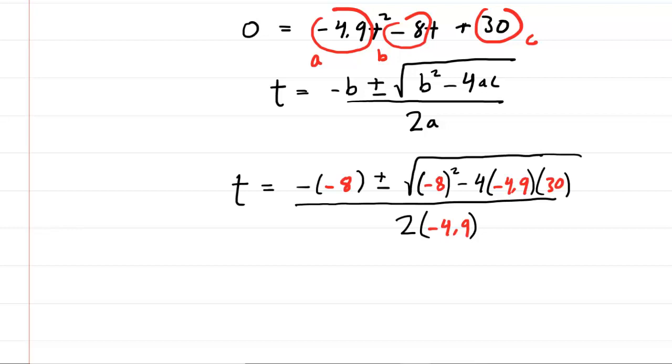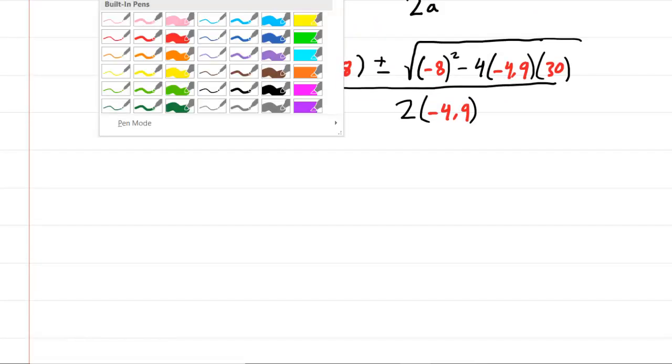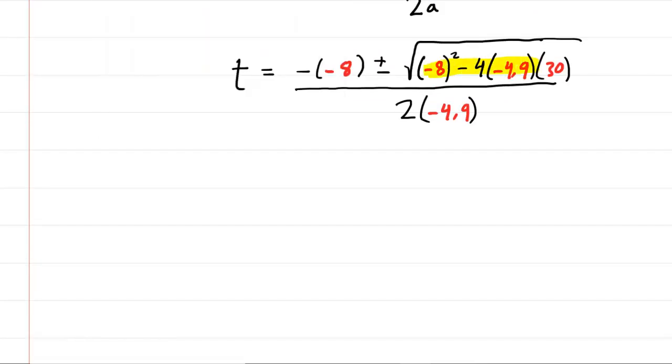So let's go ahead and plug those values into the quadratic formula. There are the values plugged in. Then the next thing you'd want to do on your calculator most likely is simplify the contents underneath the square root symbol. Also, notice you have a negative negative 8 here. So that's going to become positive 8 plus or minus the square root of 652. And then on the bottom, you have 2 times negative 4.9, which is negative 9.8.